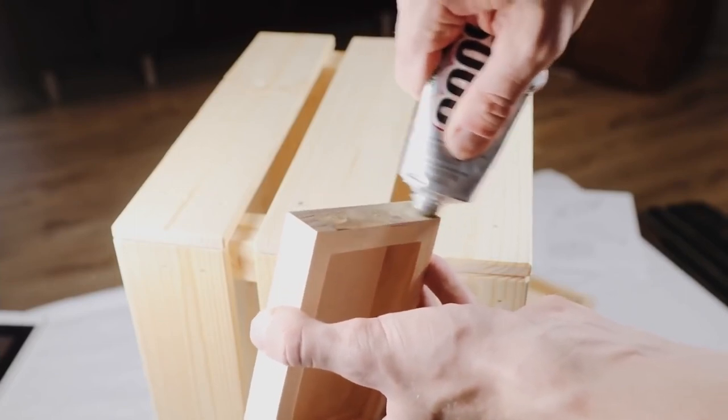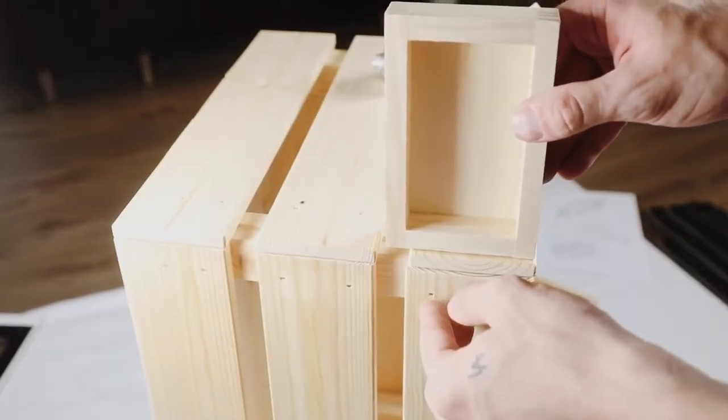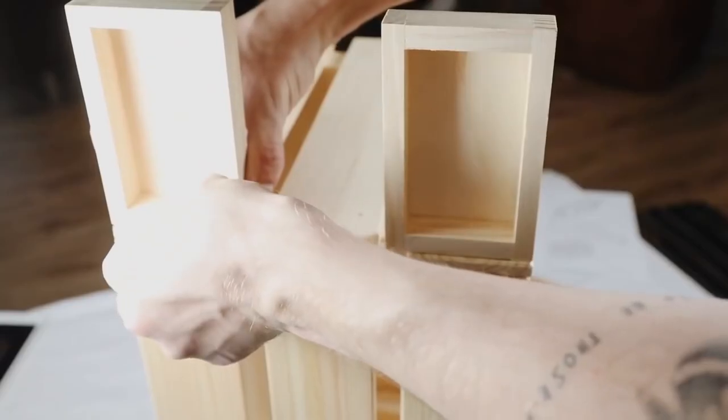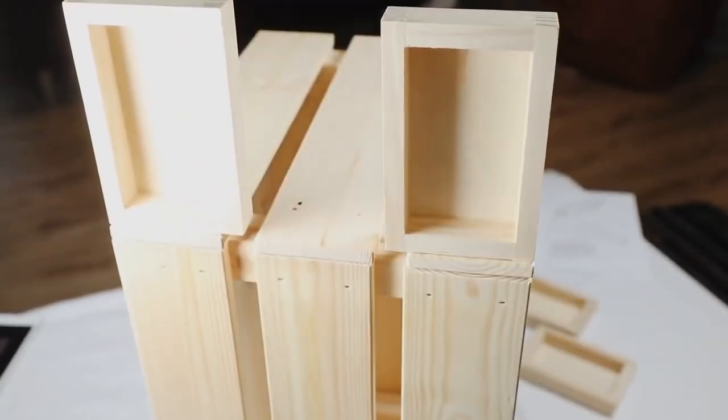On the bottom of the wooden crate, I wanted to add legs, so I elevated it off the floor with these little wooden trinket dishes, or little wooden trays that I found at the craft store as well.